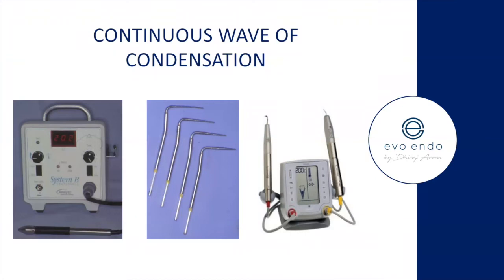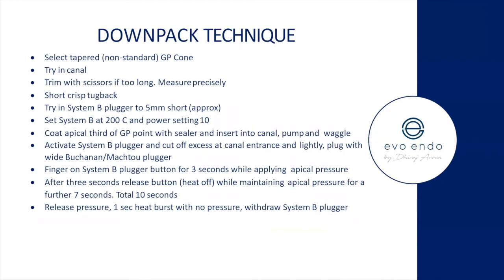Common machines used for the down pack system are System B versions, and the pluggers come in 0.04, 0.06, 0.08, 0.10, and 0.12 taper — larger canals use larger tapers, smaller finer canals use finer tapers. The down pack technique: if I ever get the opportunity to teach you practically it would be great — it's fairly fun to do.